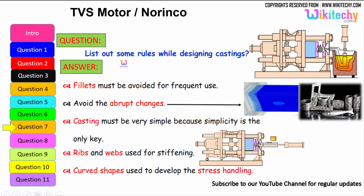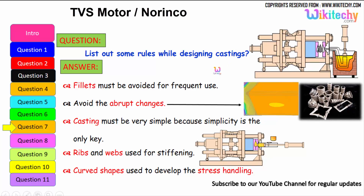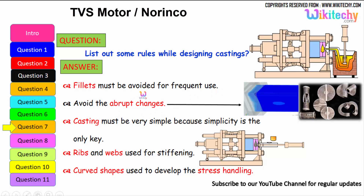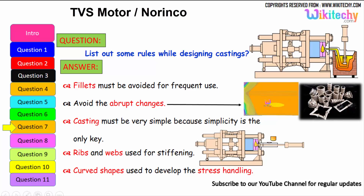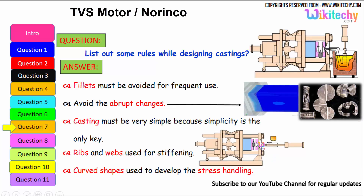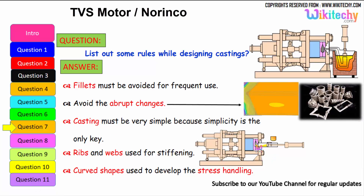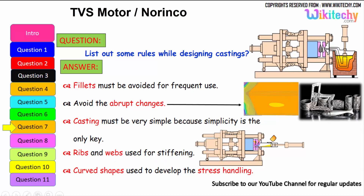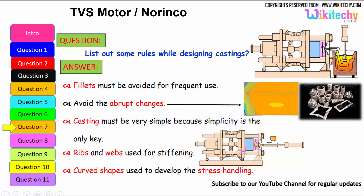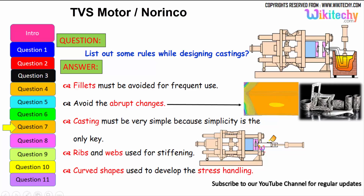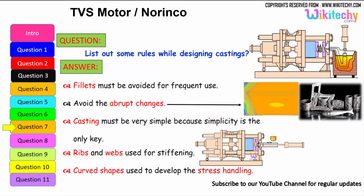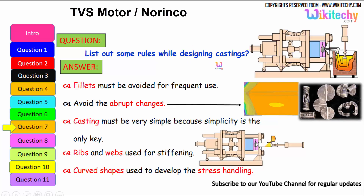Let us see some of the rules while designing castings. Fillets must be avoided for frequent use. Avoid abrupt changes in shape. Castings must be kept very simple — simplicity is the key. Ribs and webs are used for stiffening. A curved shape should be used to manage stress handling effectively. These are the rules to follow for castings.